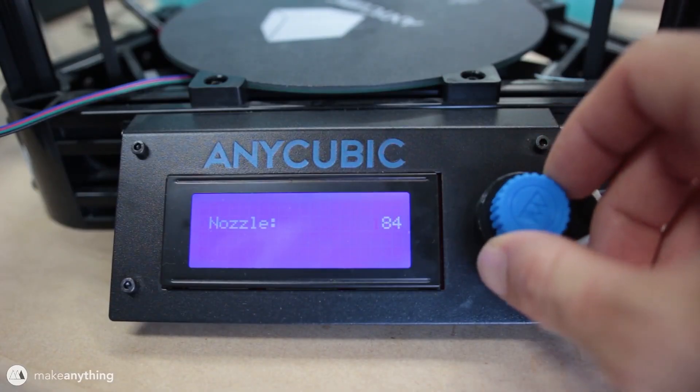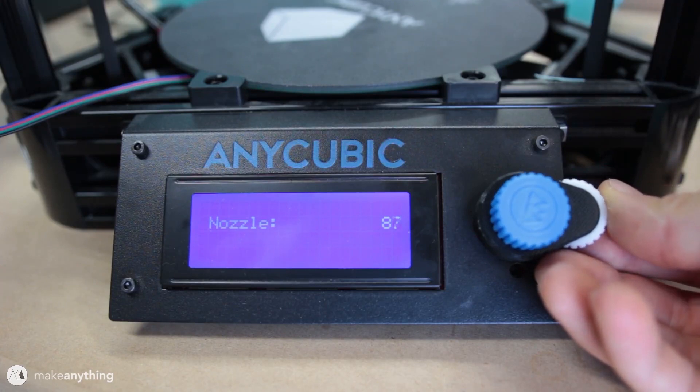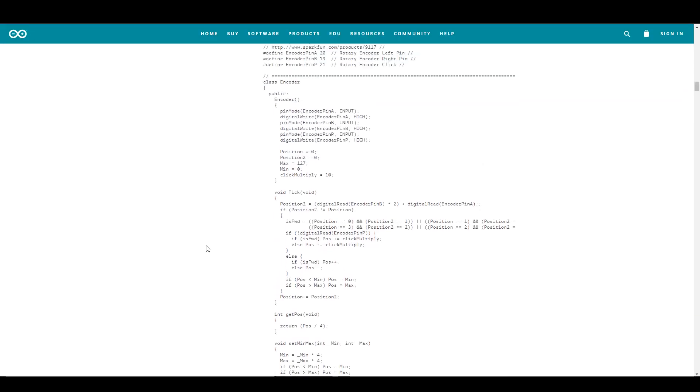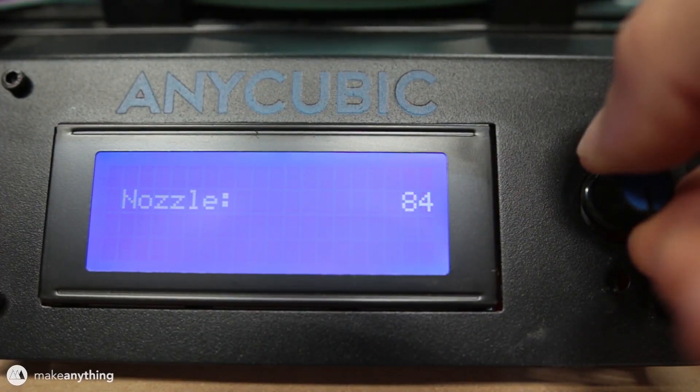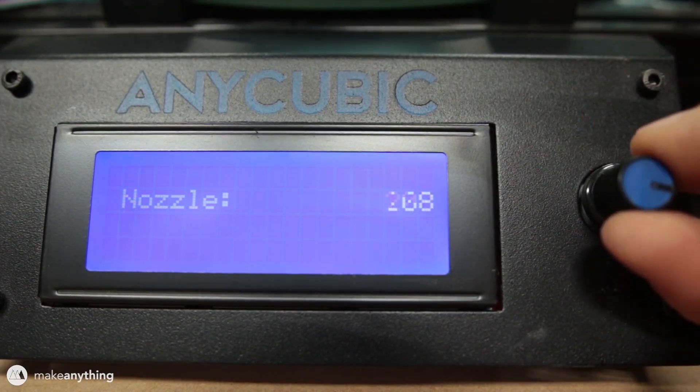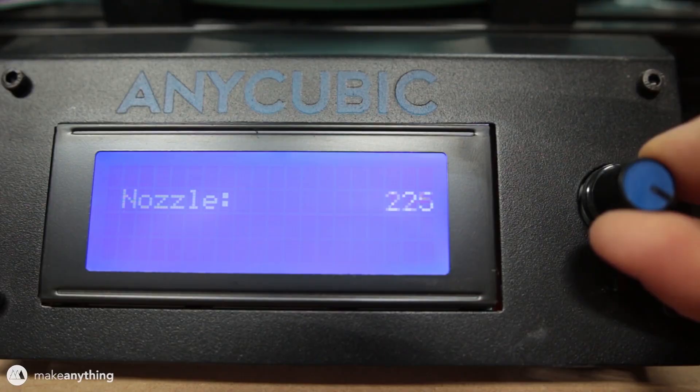I mean, Devin from Make Anything had to make a gear system for his rotary encoder because it was too sensitive. That's just insane. Okay, so the software sucks, the hardware sucks. How difficult can it be to make a good rotary encoder? Well, not too difficult as it turns out, because I actually made one myself.